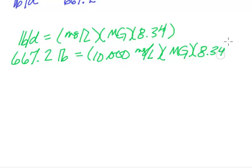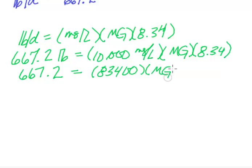Anytime you are working with a math problem, you should really try to simplify as much as you can first. I have a little bit of multiplication that I can do here on the one side, so I'm going to go ahead and do that piece. So it's 10,000 times 8.34. This ends up being 83,400, and that is multiplied by my million gallons.